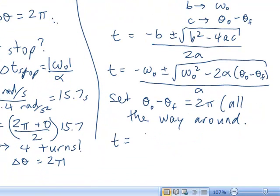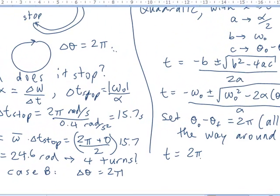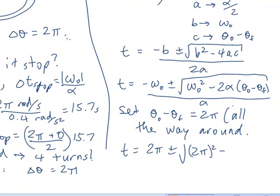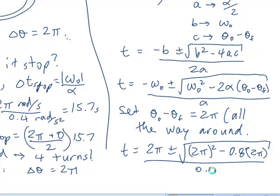Your t equals negative of omega naught plus or minus square root 2pi radians per second squared, minus, alpha was 0.4, so twice that is 0.8 times 2pi, to go all the way around, divided by alpha is 0.4.